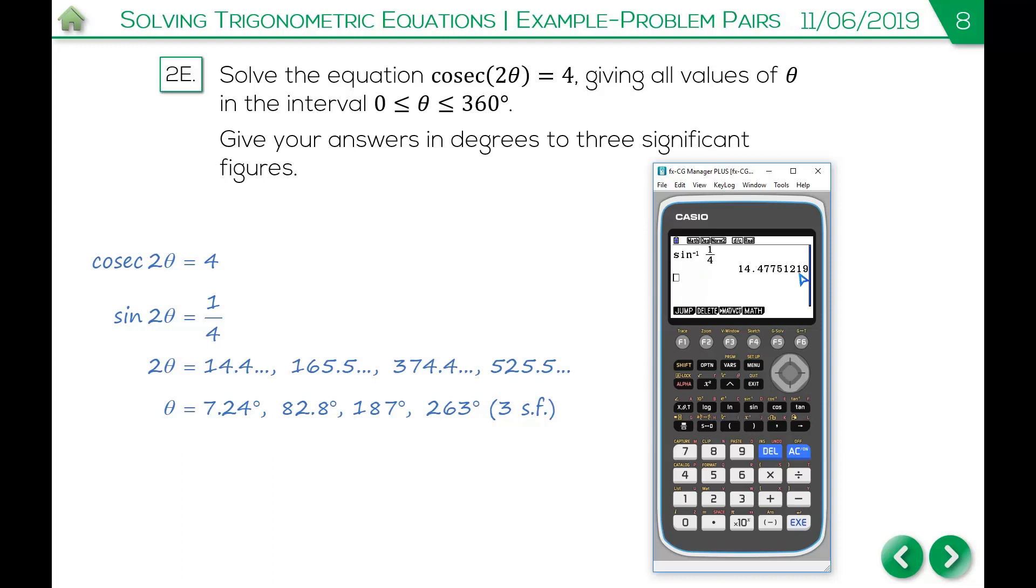So with the principal solution as the last thing I've calculated, I can press this arrow and then go alpha A, and that will store that value as the letter A on my calculator.